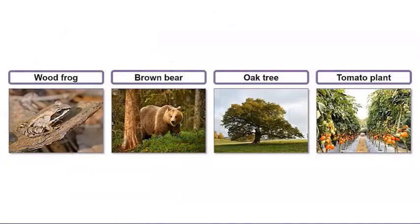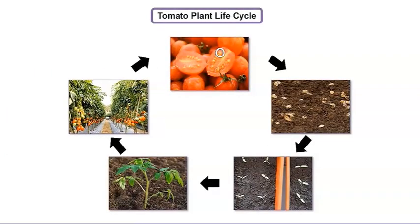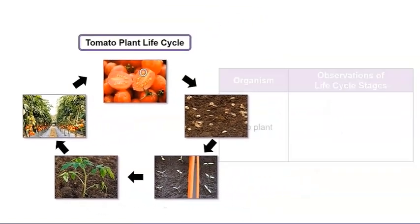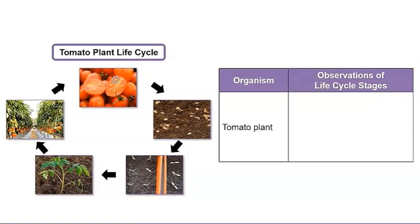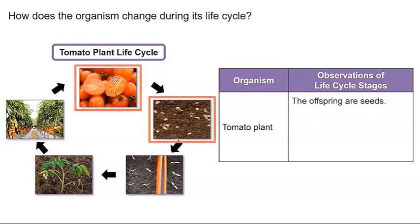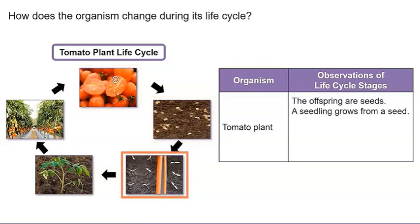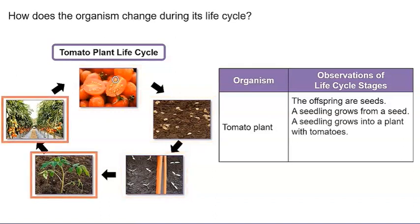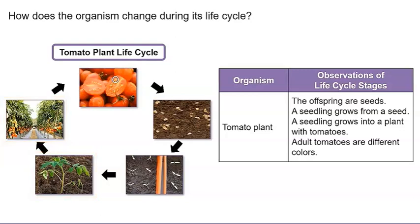We have one more life cycle left to observe. Let's look at a tomato plant's life cycle. What do you observe about the organism at each stage? Let's record some of our observations in this chart. How does the organism change during its life cycle? The offspring are seeds. A seedling grows from a seed. A seedling grows into a plant with tomatoes. Adult tomatoes are different colors.